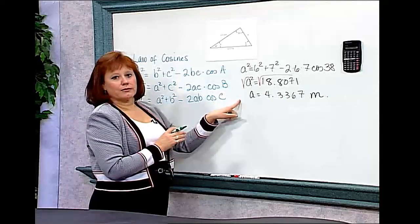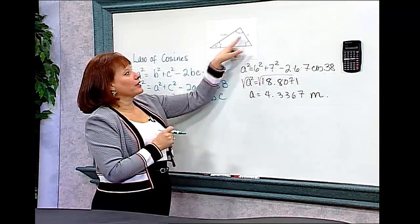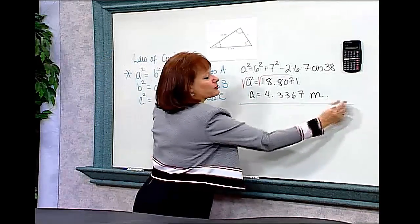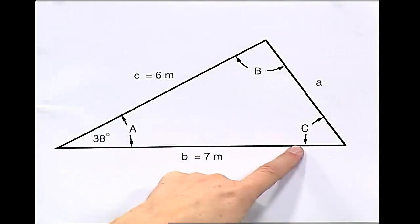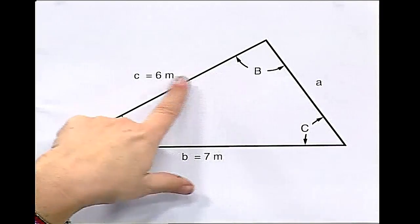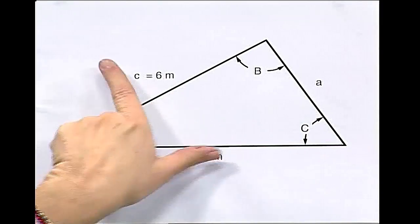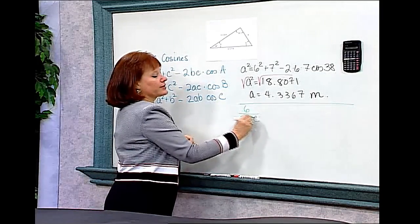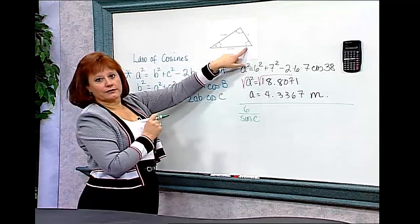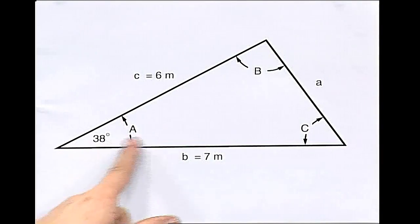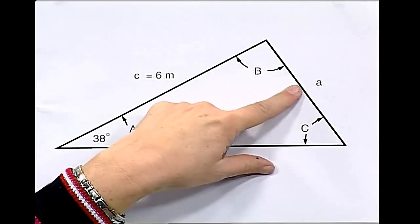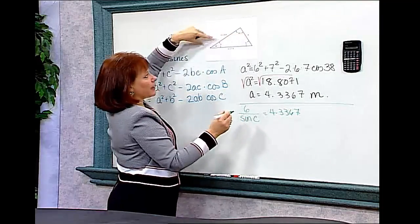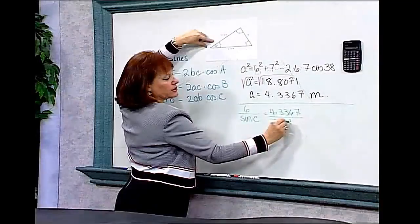Now that I have found the missing side, I have a ratio between an angle and a side, so I can solve for the other angles using the law of sines. I'll solve for angle C first, since C is across from the side that is 6 meters long. So I set up 6 over sine C, and since the angle I know is 38, I use the side across from it — 4.3367 — over sine of angle A, which is 38 degrees.